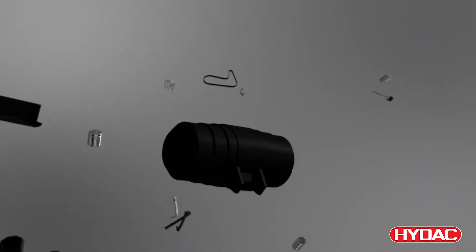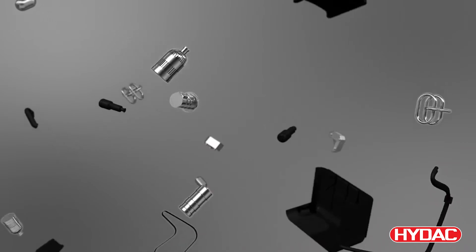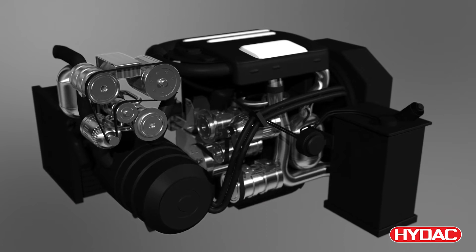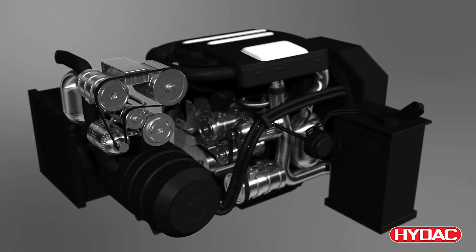Complying with these pollution limits calls for additional measures, such as installing extra exhaust treatment systems next to the combustion engine. This takes up a lot of room inside the vehicle, however.